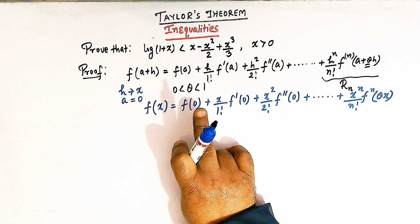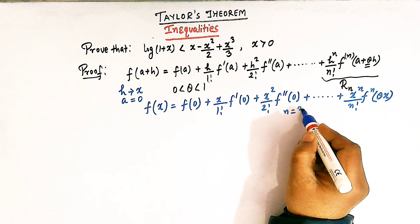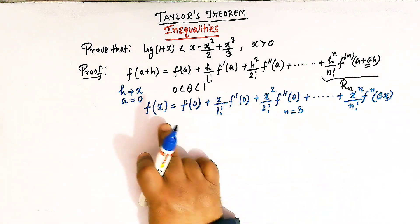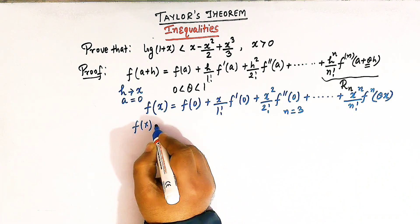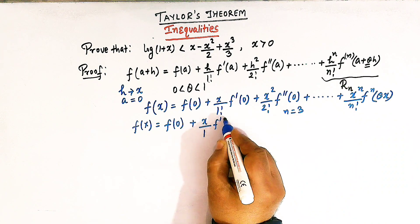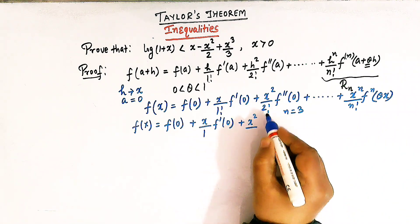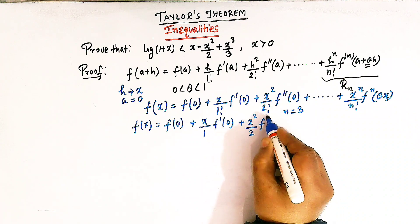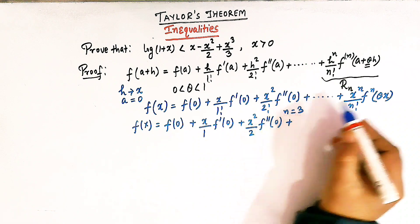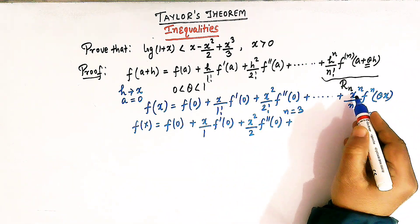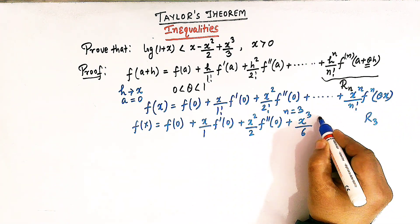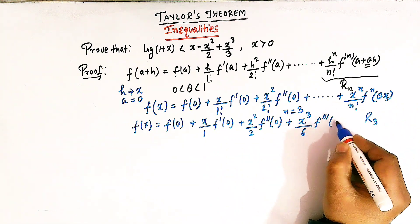We take n = 3 to prove this inequality. So taking n = 3, the expression reduces to f(x) = f(0) + x over 1 times f'(0) + x squared over 2 times f''(0), and for the remainder R3 we have the term x cubed divided by 3 factorial, where 3 factorial is 6, times the third derivative of f at the point θx, where θ lies between 0 and 1.